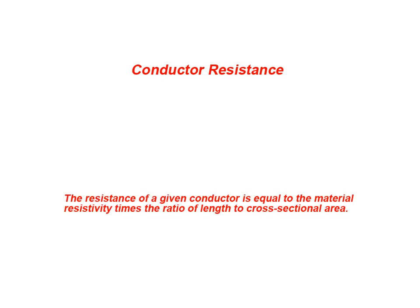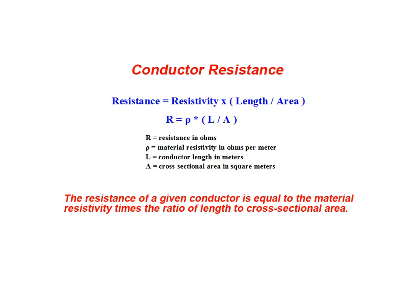The resistance of a given conductor is equal to the material resistivity times the ratio of the length of the conductor to its cross-sectional area. In this relationship, R represents the resistance of the conductor in ohms, ρ represents the material resistivity in ohms per meter, L represents the conductor length in meters, and A represents the cross-sectional area in square meters.